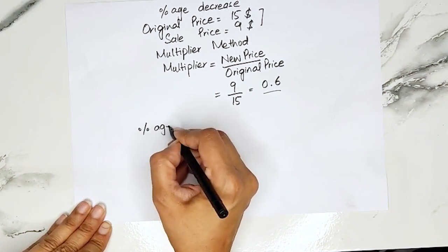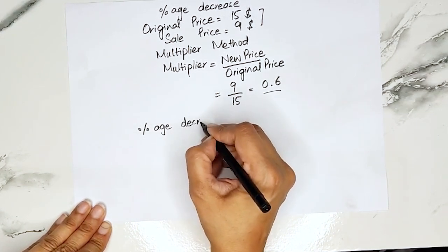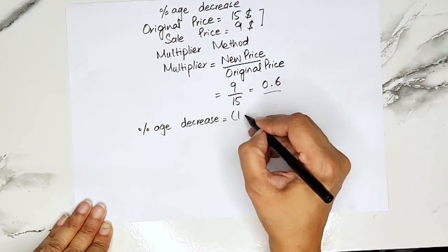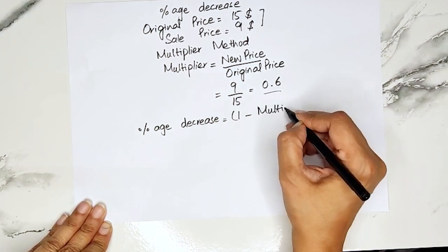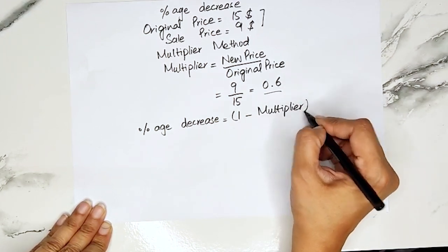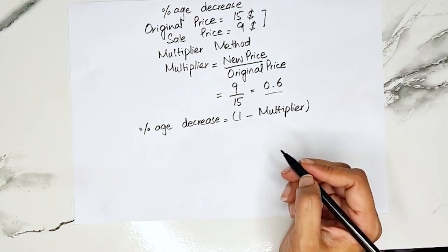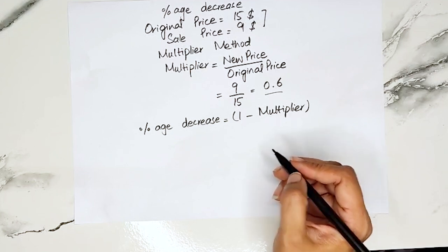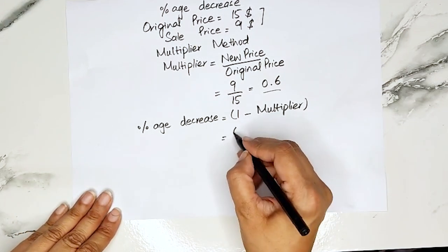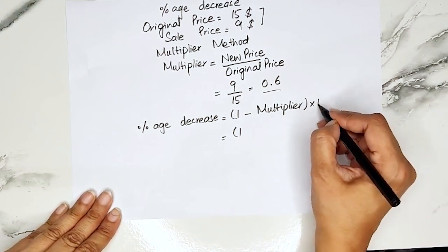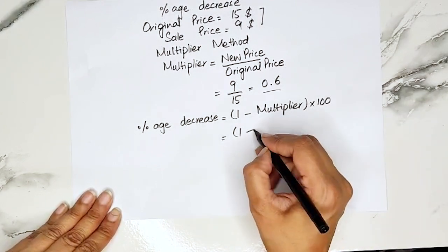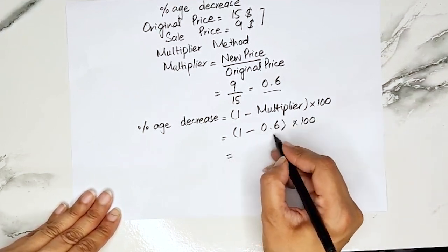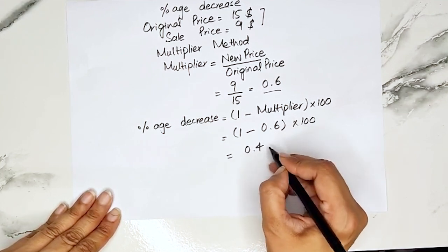To find the percentage decrease, we write: (1 minus multiplier) multiplied by 100. We subtract from 1 because we need to find how much the value has decreased relative to the original amount. So: 1 minus 0.6, multiplied by 100. 1 minus 0.6 is 0.4, multiplied by 100.